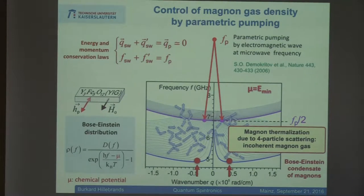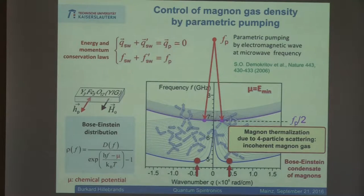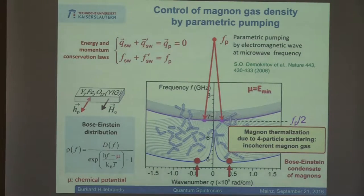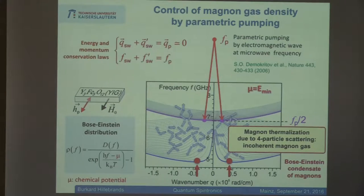We can calculate the minimum number of magnons from that theory. That is basically the parameter alpha — the parameter alpha, that is the rate. I will show you the rate equation model in a few seconds, and it has exactly these details in it.